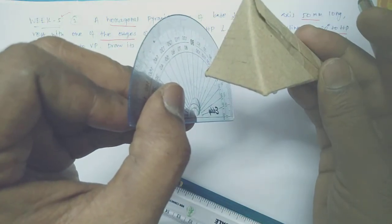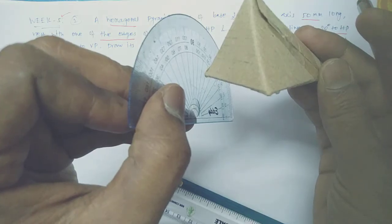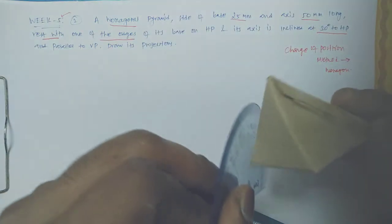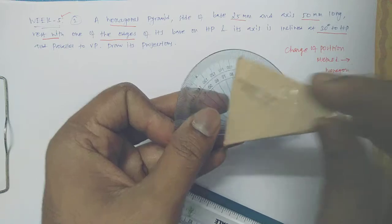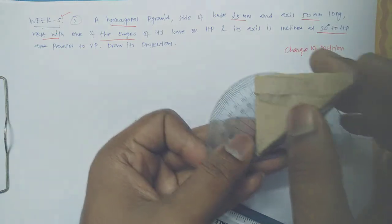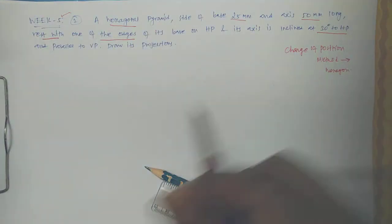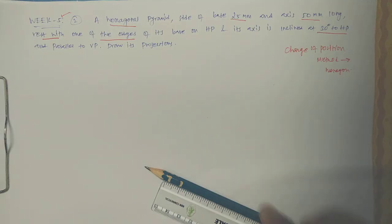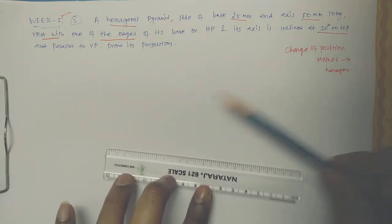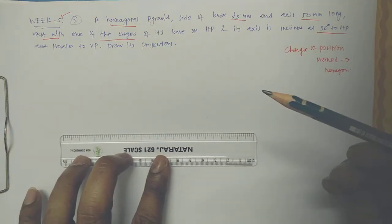The base is on HP and the axis is inclined 30 degrees to HP and parallel to VP. We draw the projection. It's simple — we just draw the axis line first. Let me draw one axis line.